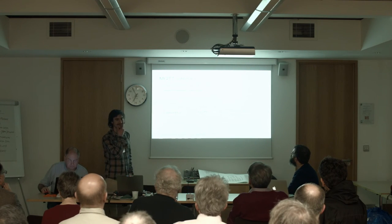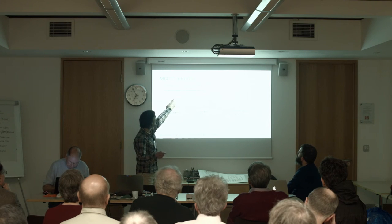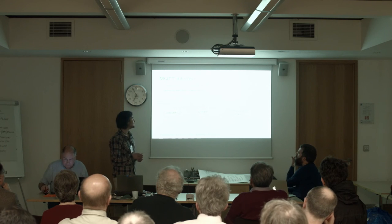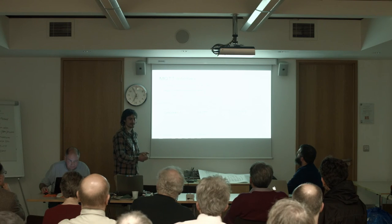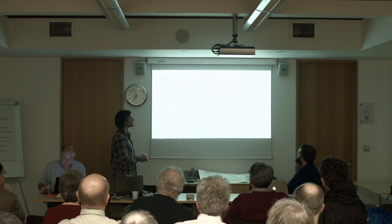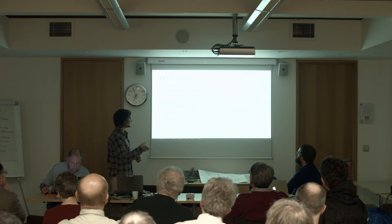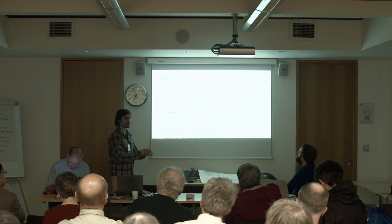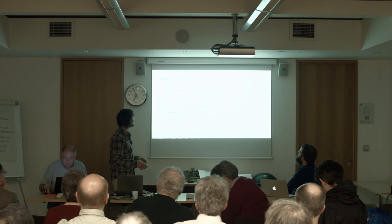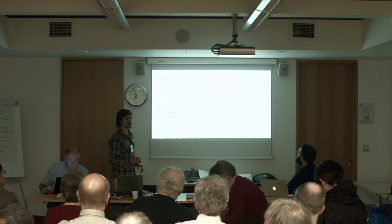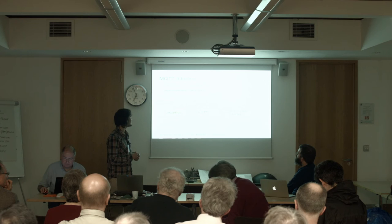The standard MQTT topics we use have 'emon' as the base topic, and the topic names inform the EmonCMS feed names. So if you post to emon/emontx/power1 with a value, that results in EmonCMS inputs called emontx and power1. If you post to emon/upstairs/temperature with your value, that just appears in EmonCMS inputs. If you're interested in getting a value into another application, all you need to do is subscribe to the topic you're interested in and pull that data value out.